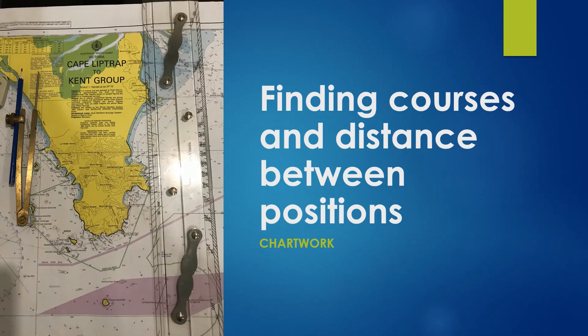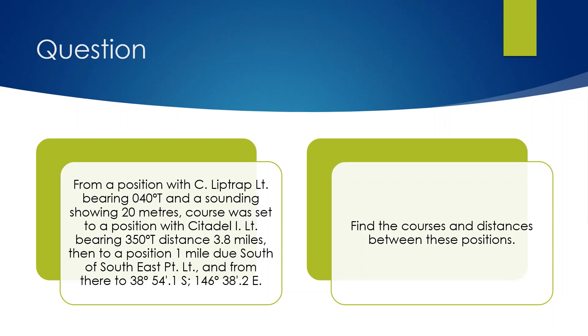Hi everyone. Today I take up a new question in the subject of chart work. Today's question will involve finding courses and distances between positions that you have to derive on the chart. It's a simple question, but you have to be mindful of a few things. For this question we need Australian Chart 802, and if you don't have this chart, don't worry — read the question and think how you would have gone about solving it.